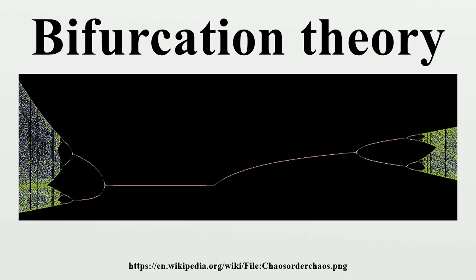The name bifurcation was first introduced by Henri Poincaré in 1885 in the first paper in mathematics showing such a behavior. Henri Poincaré also later named various types of stationary points and classified them as bifurcation types.